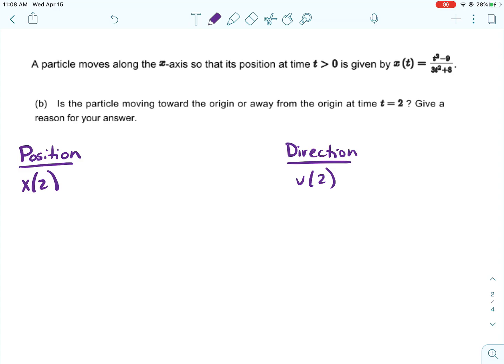But the position is going to come from the position function, and then the direction is going to come from the velocity function. So a positive direction is going to be the particle is moving to the right, and negative velocity, the particle is moving to the left.